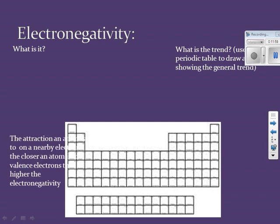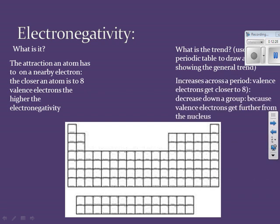Next is electronegativity — the attraction an atom has to a nearby electron. Think of it as how badly an atom wants another electron to complete its eight-valence electron shell. As you go across the periodic table, electronegativity increases. One key thing to remember: fluorine is the most electronegative element on the periodic table. As we go down a group, electronegativity decreases.